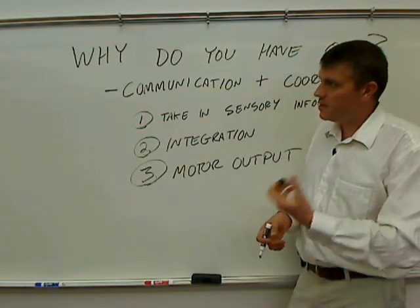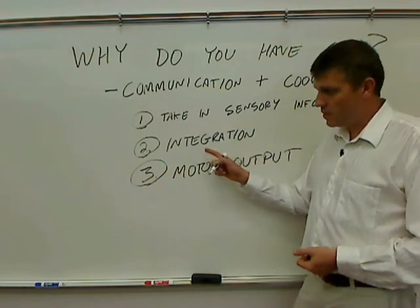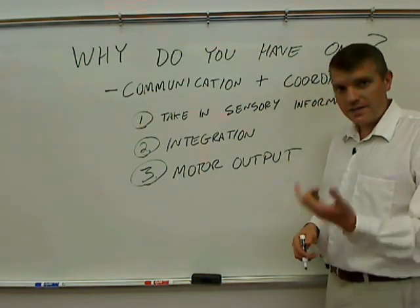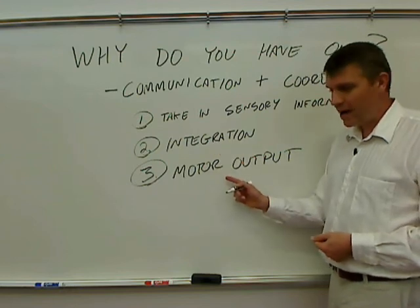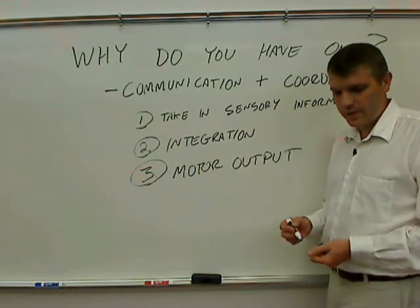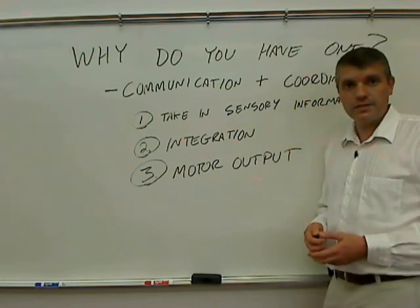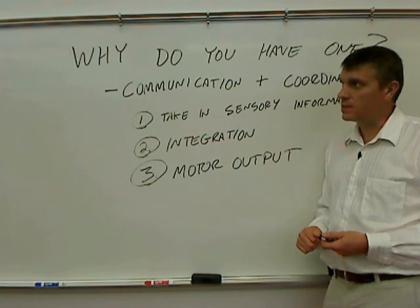So why do you have one? Communication and coordination and these three major things that the nervous system does. Takes in sensory information, makes sense of that sensory information by integration, and then motor output to respond to that sensory information. And that's what the nervous system is, and that's why you have one. So that should help you with that essay question on the exam.